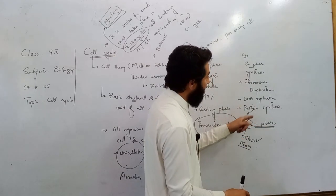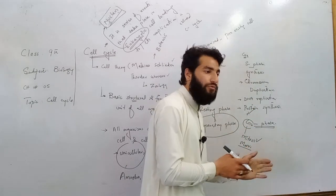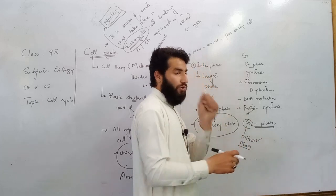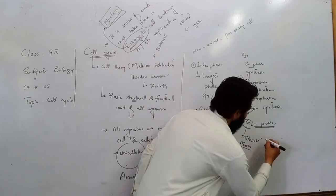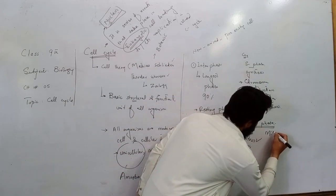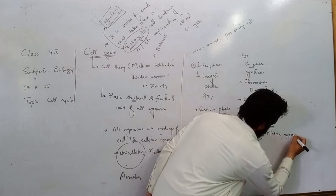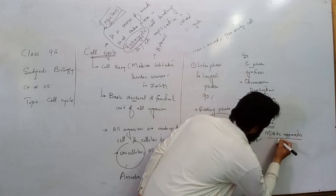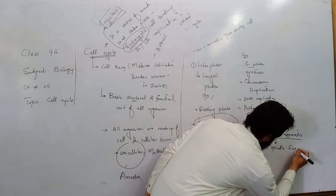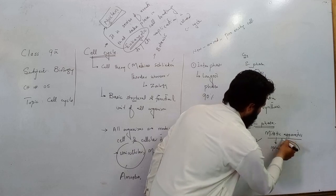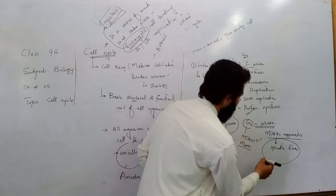G2 phase starts at the end of S phase. Once DNA replication is done, the cell prepares the mitotic apparatus, including the spindle fibers, which will be used to move chromosomes through the stages of division such as prophase and metaphase.